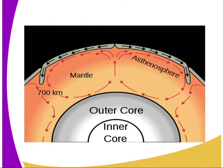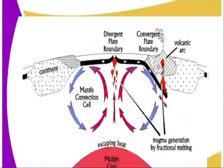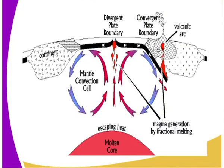For example, you can see the movement of the magma in the mantle using the convection current, which results in the plate movement. We can also see the convection cells and how they result in the movement of magma in the mantle, driving the plates.